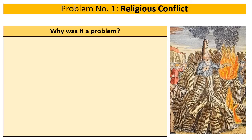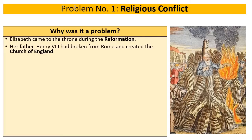Religious conflict was a major issue for Elizabeth in England. When Elizabeth comes to the throne in 1558, Europe is at the height of what is known as the Reformation. This is a period of huge cataclysmic change when Christianity is embroiled in conflict between the Catholic Church — the old form of Christianity — and the new Protestant form of Christianity. Elizabeth's father Henry VIII had broken from Rome, rejecting the authority of the Catholic Pope and creating an independent Church of England.